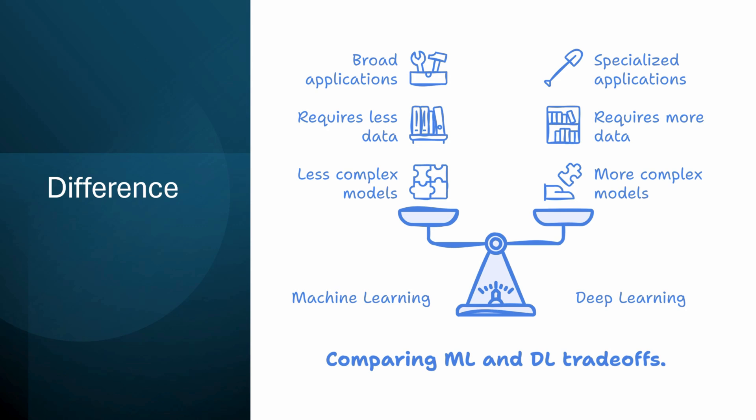Despite its advantages, deep learning is not always the best option. It typically requires far more data and computational power than traditional machine learning methods. For many problems, especially those involving smaller data sets, traditional machine learning approaches can be more efficient and just as effective.